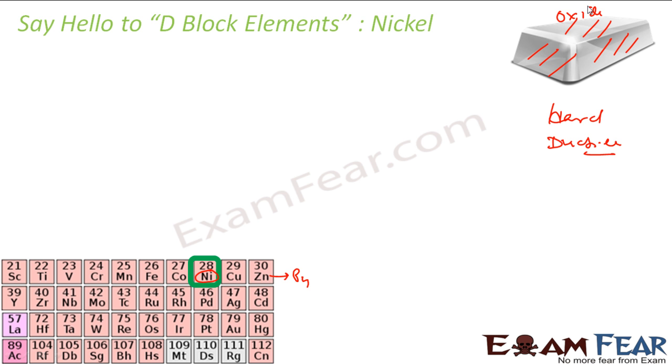And this also is named after a ghost, again a German word. Copper Nickel. So nickel means actually enemy or devil in German. And this is called copper enemy. Why?